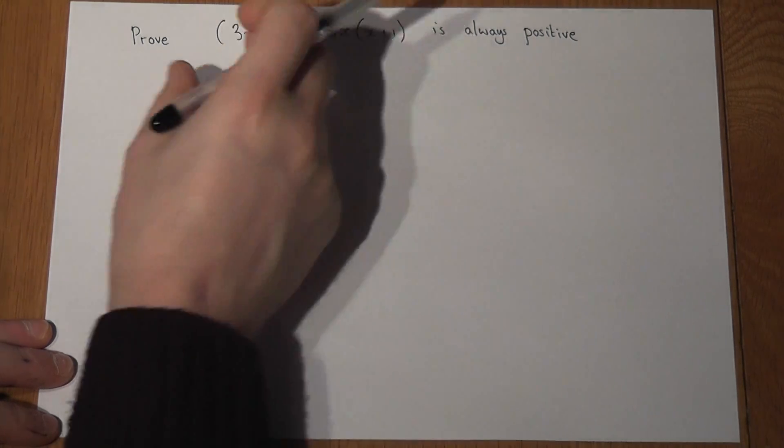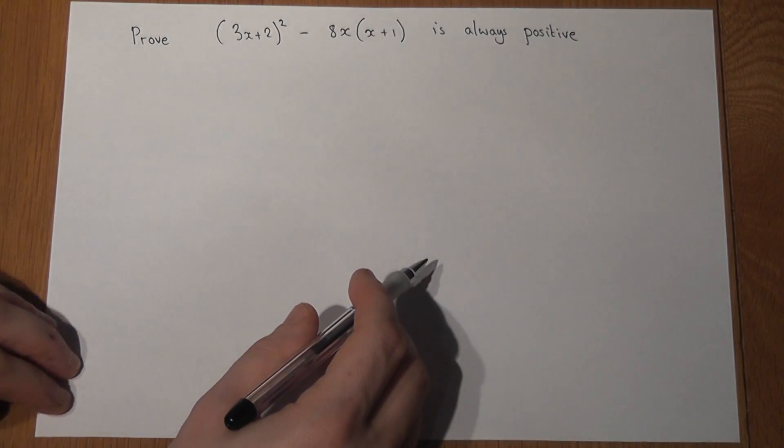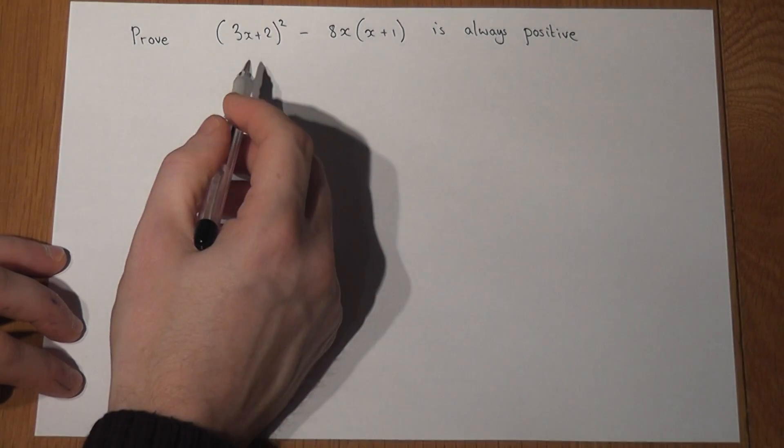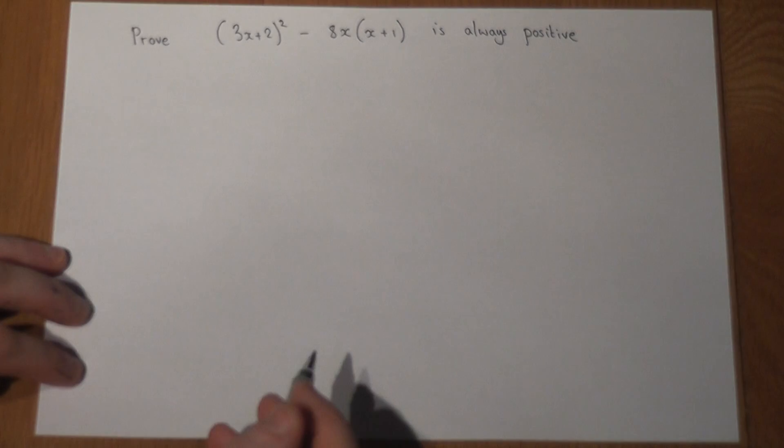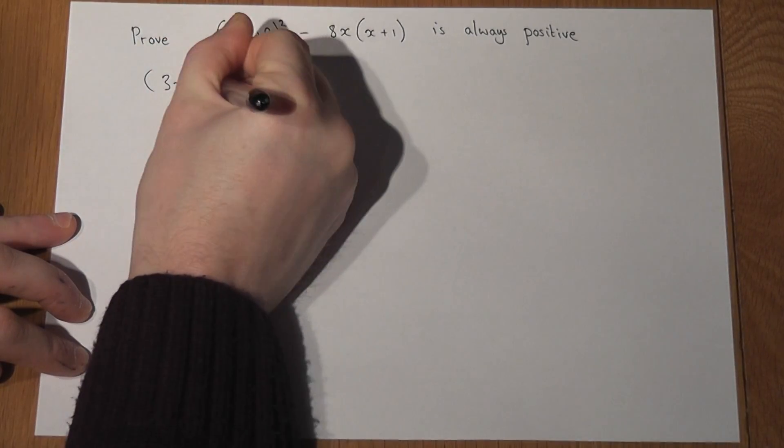We have two parts to this. We've got the squared term take away 8x bracket x plus 1. So I'll deal with the 3x plus 2 squared first and try to expand this.